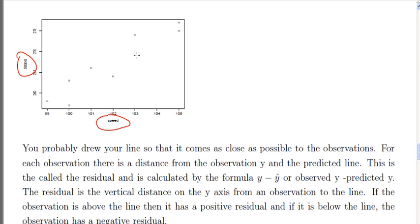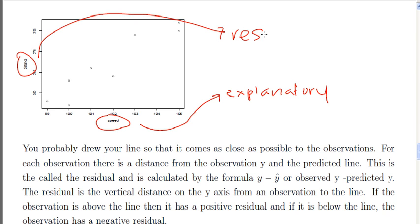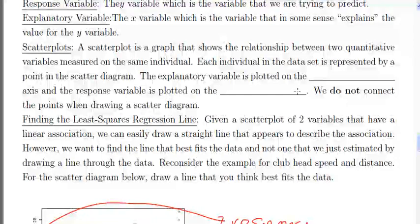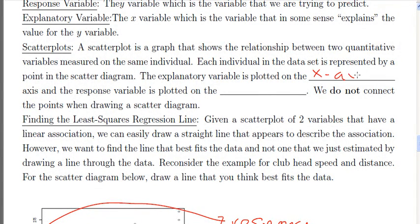We can see there's a positive association. As one variable, as speed increases, so does distance. So we have a positive association. It looks to be linear, meaning it follows a straight line. It makes sense that speed is the explanatory variable and distance is the response variable, because the speed has something to do with how far the ball will travel. So speed explains the distance that the golf ball travels. We always put the explanatory variable on the X axis, as we saw with that scatter diagram, and we put the response variable on the Y axis.